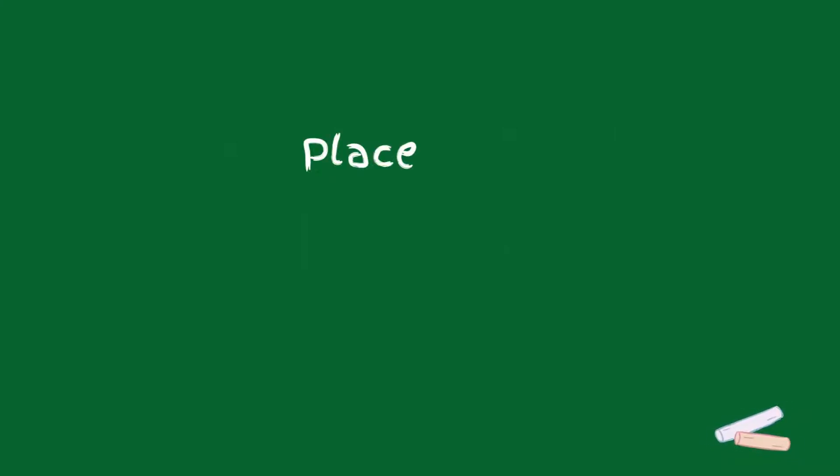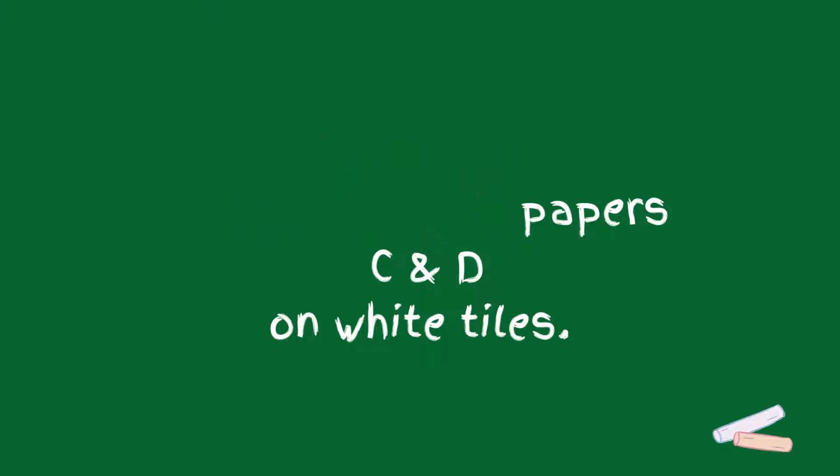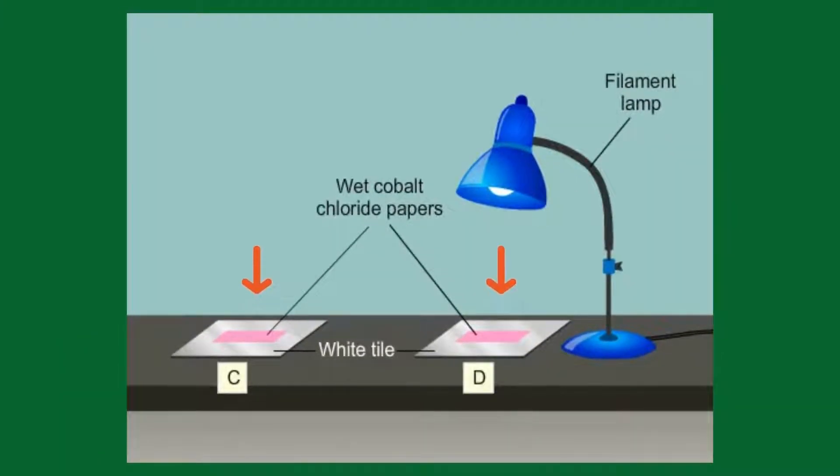Place two wet cobalt chloride papers C and D on white tiles. Place C away from the lamp and D under the lamp. Observe the cobalt chloride papers.